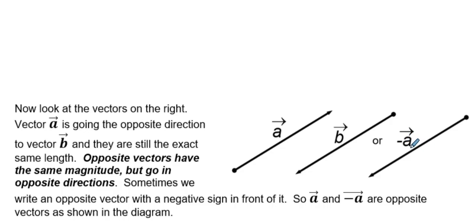So it's the opposite of vector a. Both of these are identical. Vector b and this vector here are exactly the same. They're equal vectors.